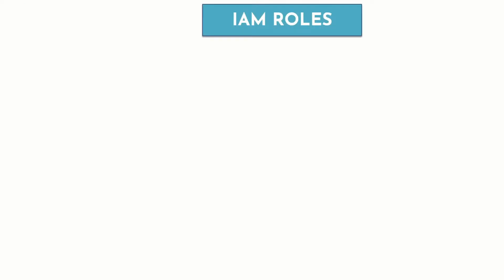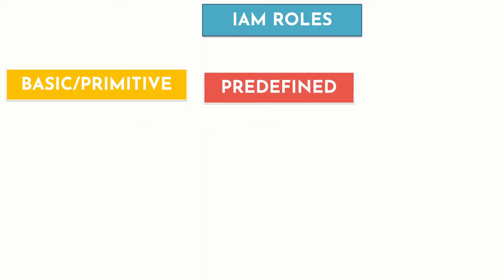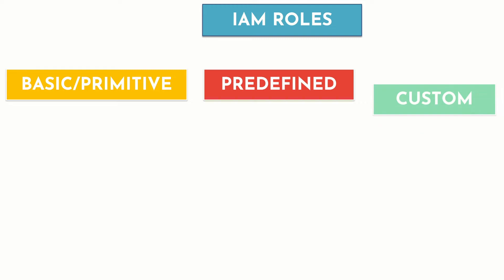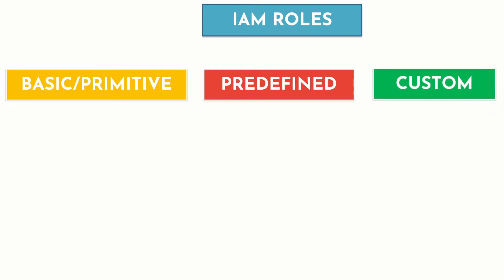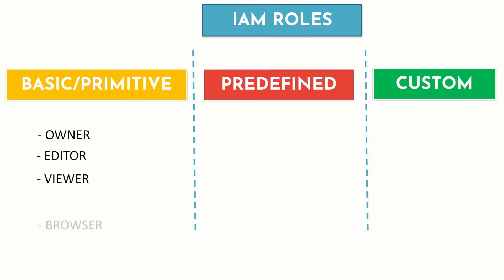There are three types of IAM roles in GCP: basic or primitive roles, predefined roles, and custom roles. Basic roles are referred to as primitive roles and these are owner, editor, viewer, and browser. They provide a really broad level of permissions and are not recommended.